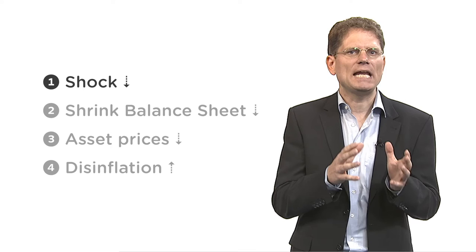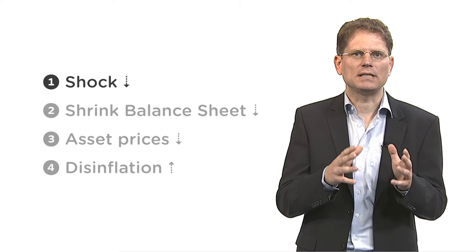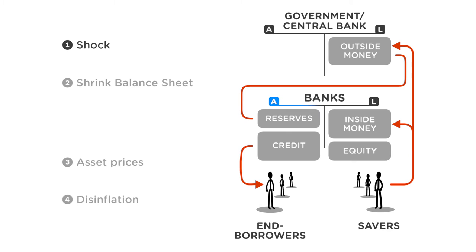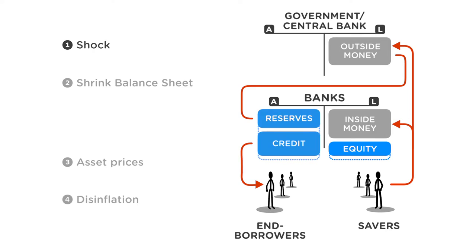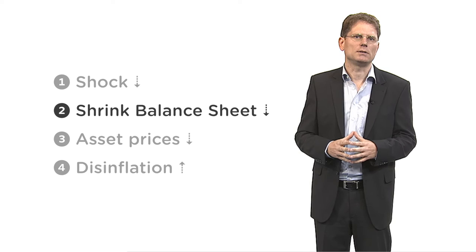The first step is the immediate impact of the adverse shock on the end borrowers' ability to repay their loans. This directly translates into a decline in the value of the bank's assets. Looking at the asset side of the bank's balance sheet, a decline in the value of credit, say by 5%, leads to a much larger percentage decline in equity. Liabilities in the form of inside money stay the same, and all the losses have to be absorbed by the equity. Since equity declines in percentage terms by much more than banks' assets, the asset-to-equity ratio of the banks — that is, the leverage ratio — is shooting up.